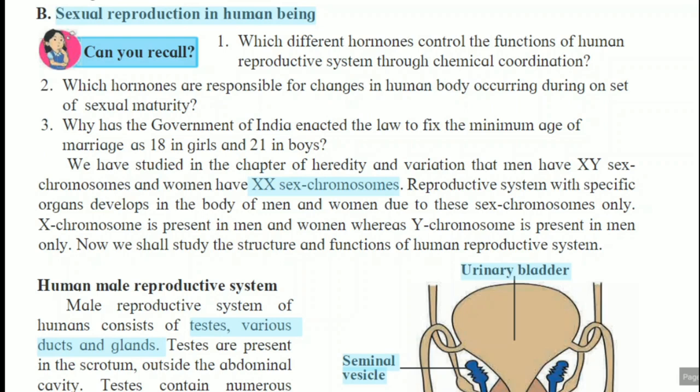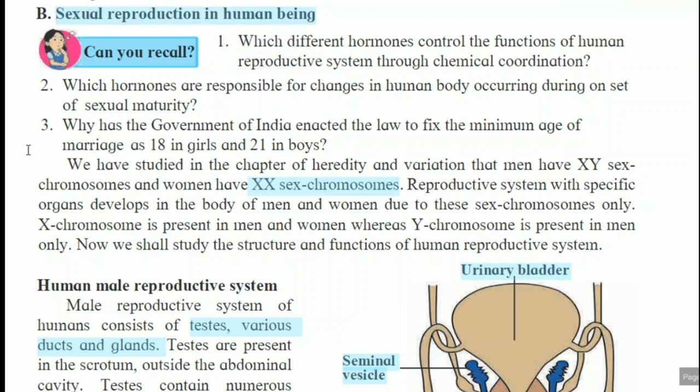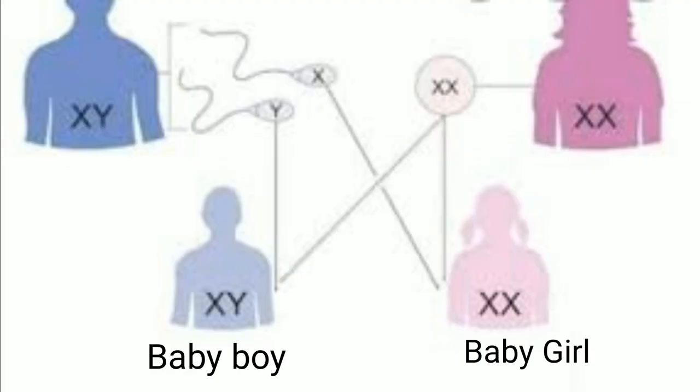Today we are going to start sexual reproduction in human beings. In human beings, the male is heterozygous because he carries the X and Y chromosomes, whereas the female is homozygous — that is, she carries the XX chromosomes.